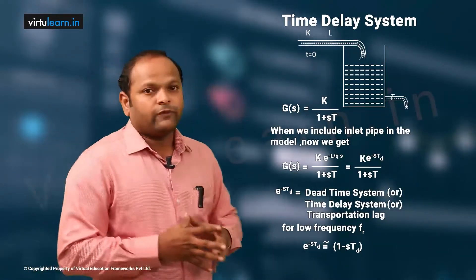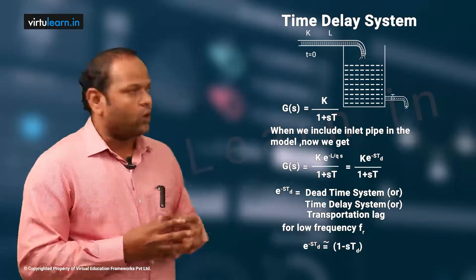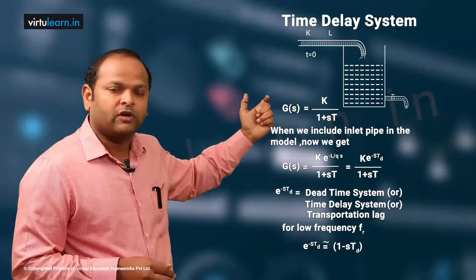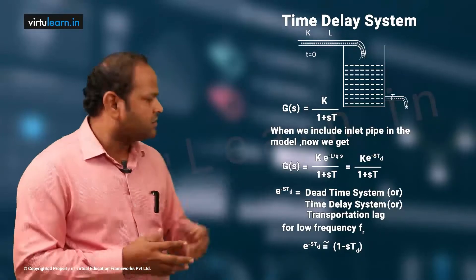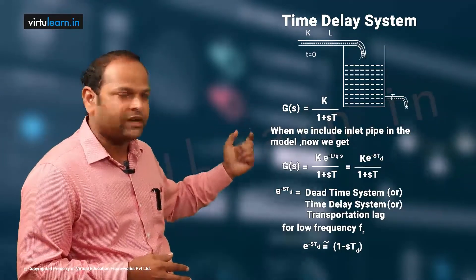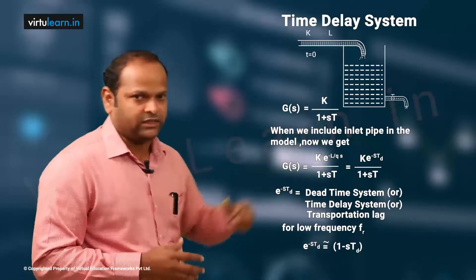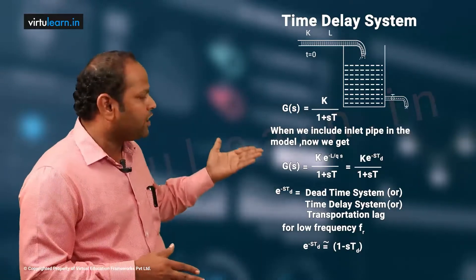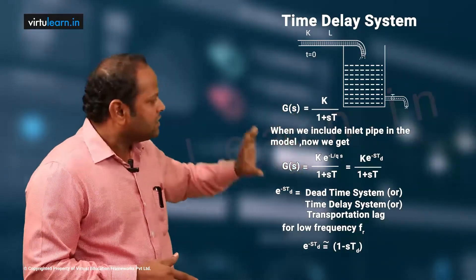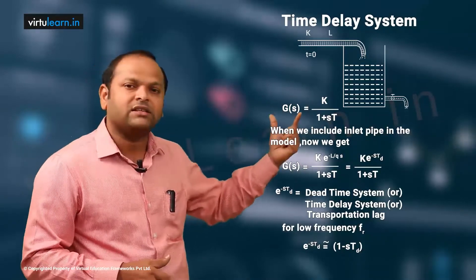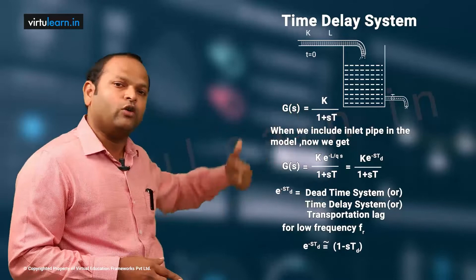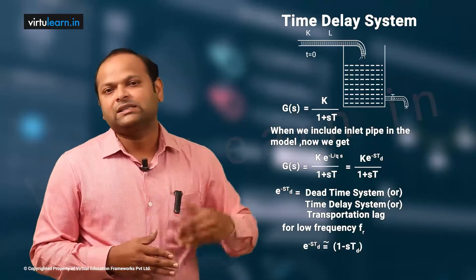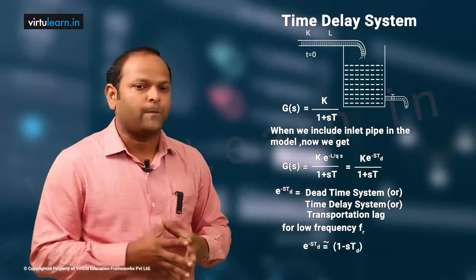When applying the Routh-Hurwitz criteria to time delay systems, we use the fact that for low frequencies — since all process systems are low frequency systems — e^(-s·td) can be approximated as (1 - s·td). This is the simplest approximation; other approximations like the Padé approximation also exist. Wherever e^(-std) appears, we substitute (1 - std) to find the characteristic equation, then form the Routh array to determine system stability.